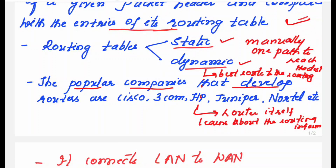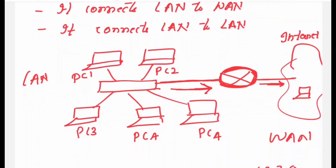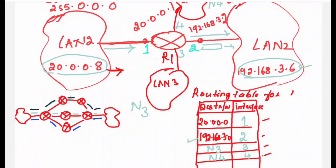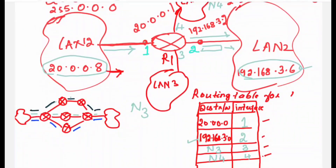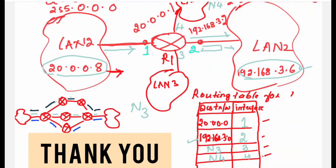Popular companies that develop routers include Cisco, 3Com, HP, Juniper, Nautil, and others. This is all about the networking device called router, which is a layer 3 device. Hope you find this session useful. If you find it useful, please like, share, and subscribe to my channel. Thank you, bye-bye and take care.